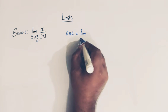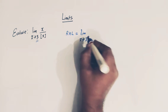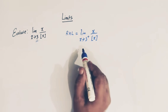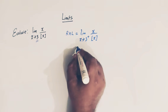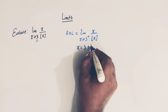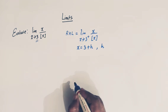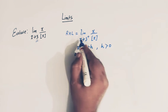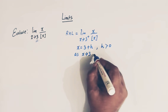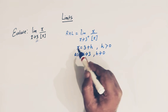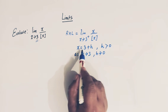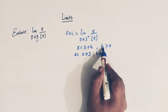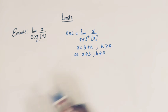So here we have limit x tends to 3 positive of x over greatest integer x. We will make a substitution and let x equal to 3 plus h, where h is a very very small quantity but greater than 0. As x tends to 3, h tends to 0. We substitute x equal to 3 plus h because we are finding the right hand limit.